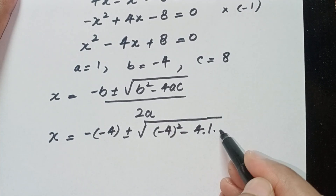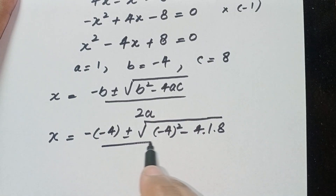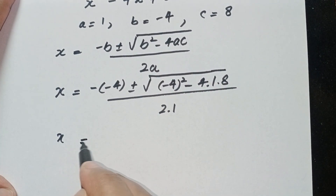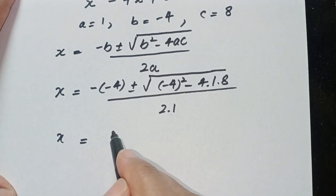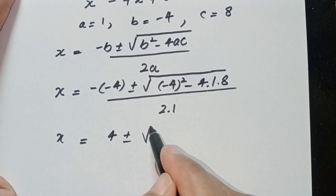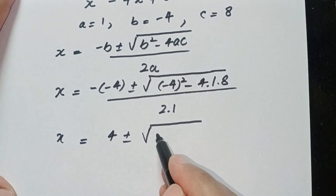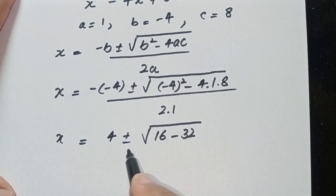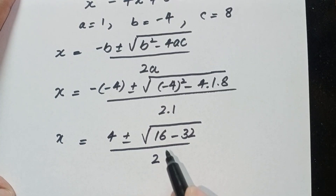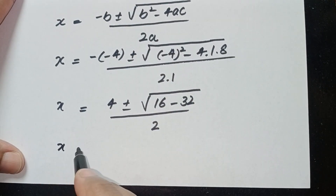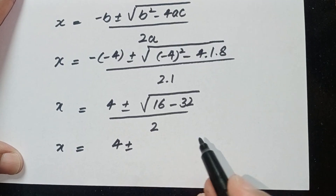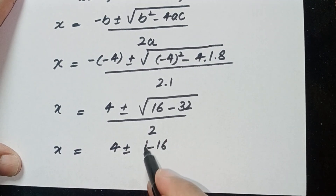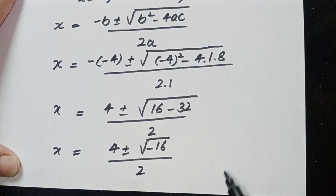b is minus 4, so minus b gives plus 4, plus or minus square root of: (minus 4) squared minus 4 times 1 times 8, all over 2 times 1. In the next step: x equals 4 plus or minus square root of (16 minus 32), over 2, which gives square root of minus 16 over 2.